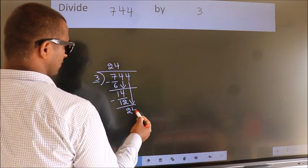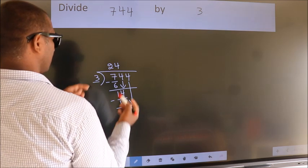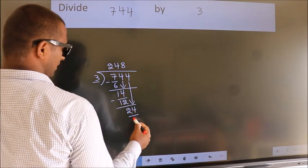So, 4 down. So, 24. When do we get 24? In 3 table. 3 times 8 equals 24.